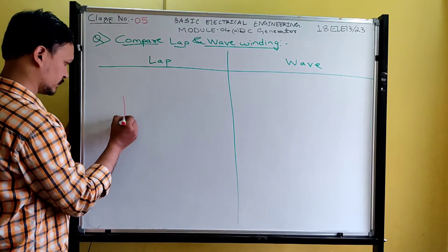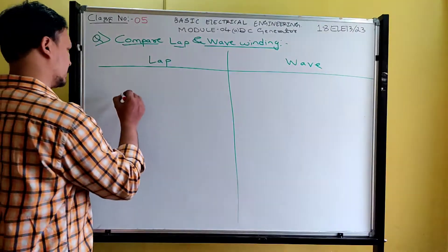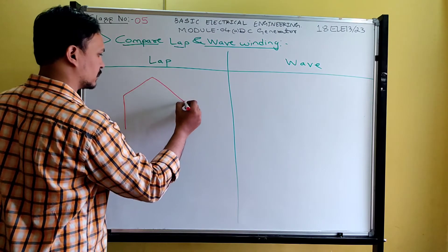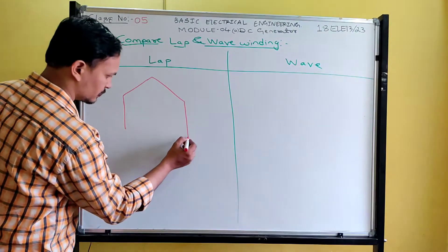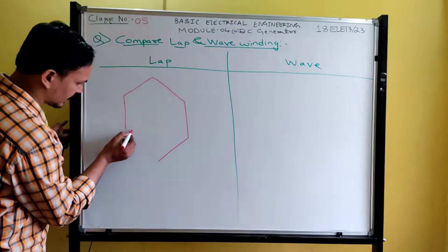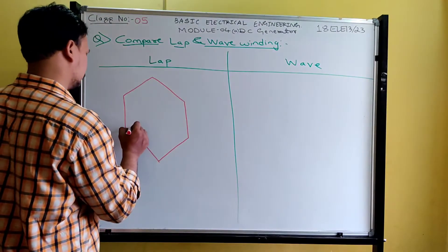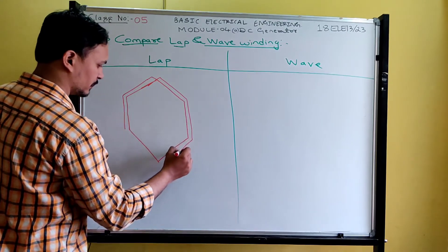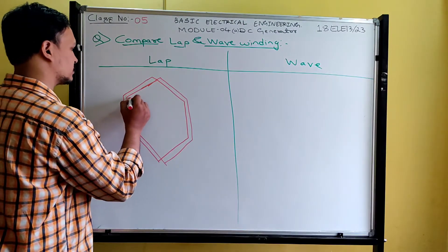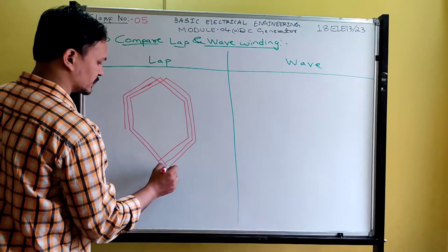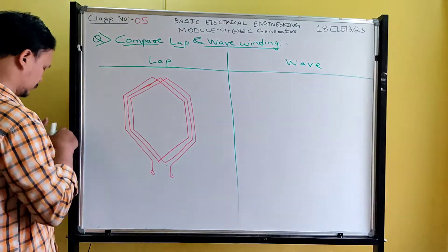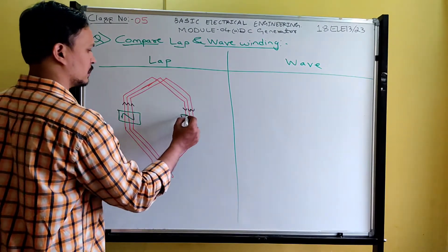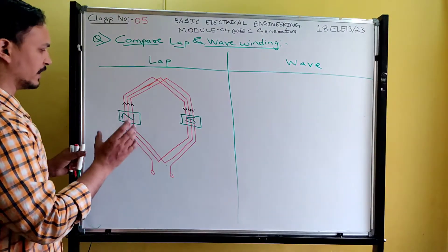Please observe carefully. For lap winding, this is the first conductor — let's say it is the first conductor of the north pole. This is the starting end and this is the finishing end. The finishing end of the first north pole conductor is connected to the first south pole conductor, and the finishing end of the south pole conductor is connected back to the second north pole conductor. Between the poles, the winding is overlapped. Group all conductors under north pole and all conductors under south pole — this is the winding arrangement for lap winding.